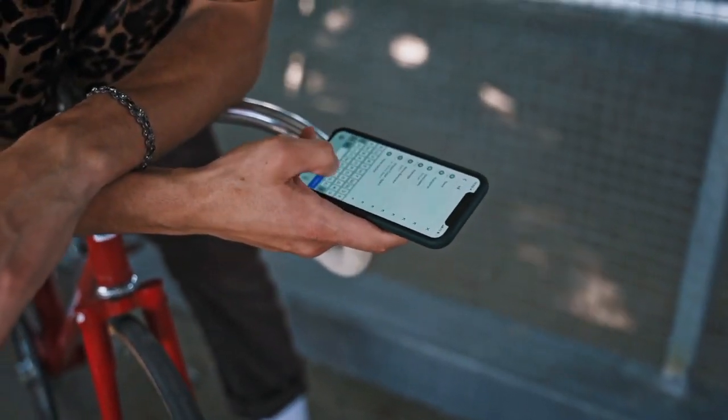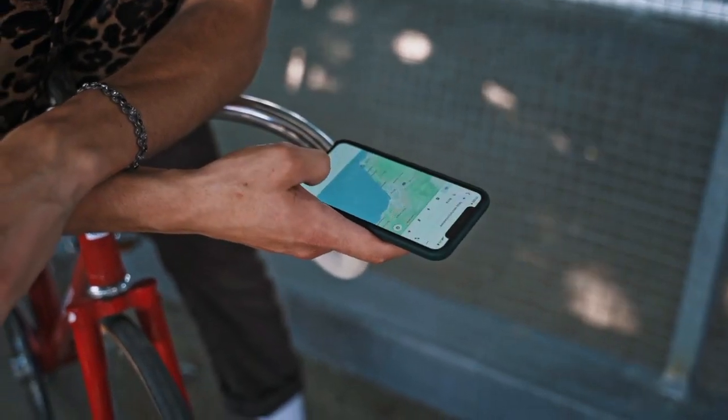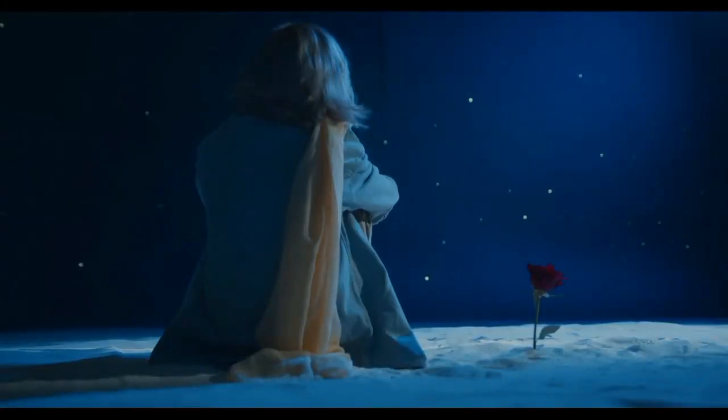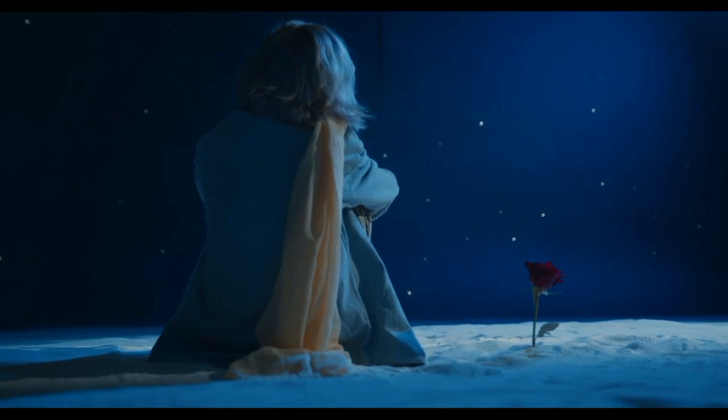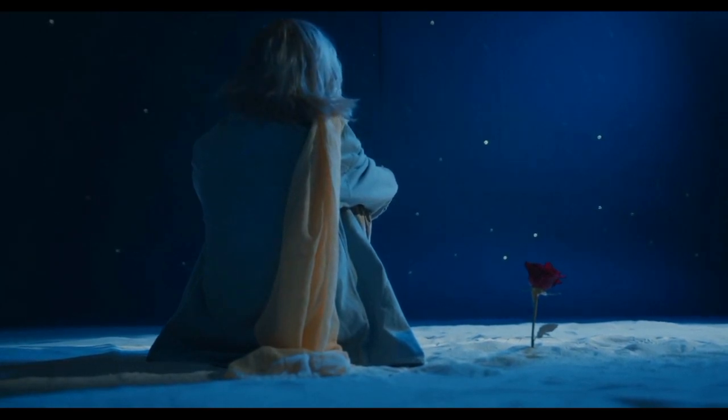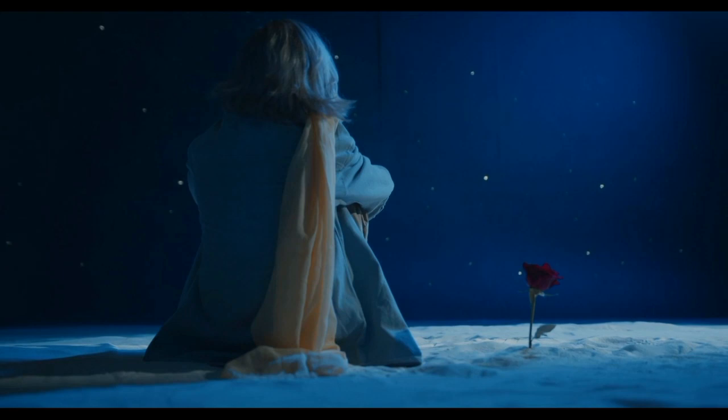Kepler 22b: as the first known exoplanet residing in the habitable zone of a sun-like star, Kepler 22b might hold liquid water. Scientists, however, still need to determine the composition of this super Earth-sized planet.